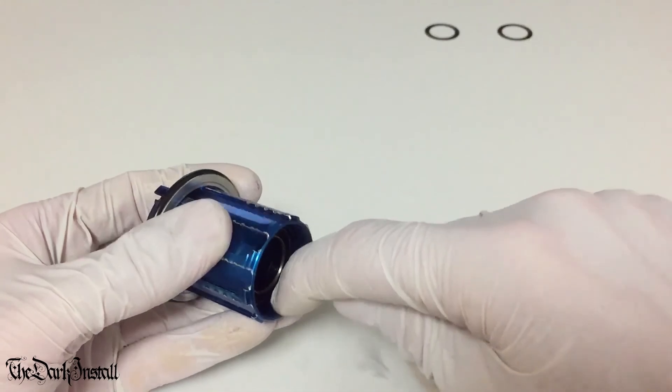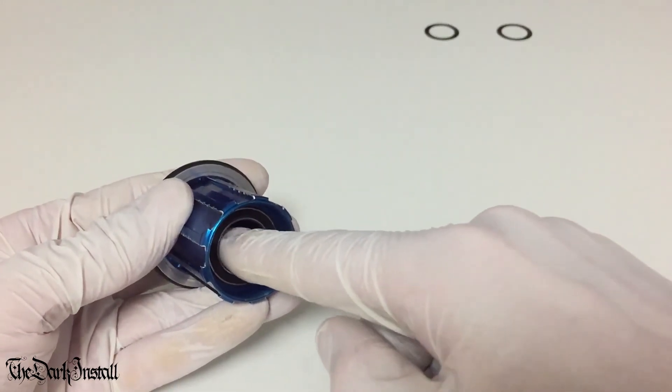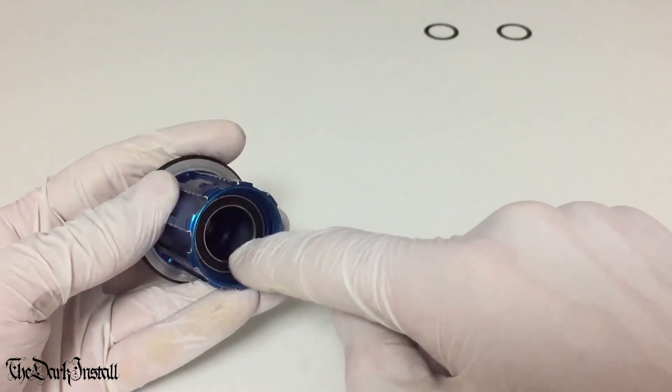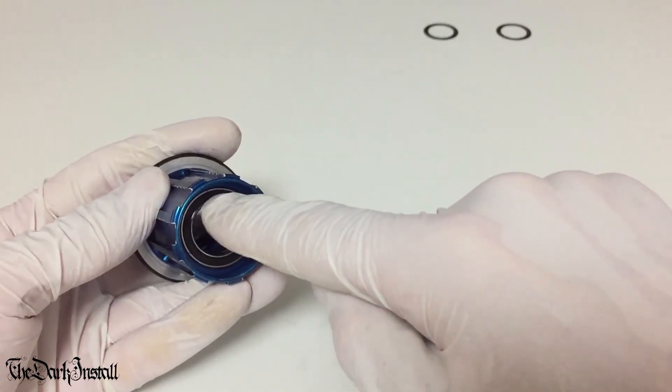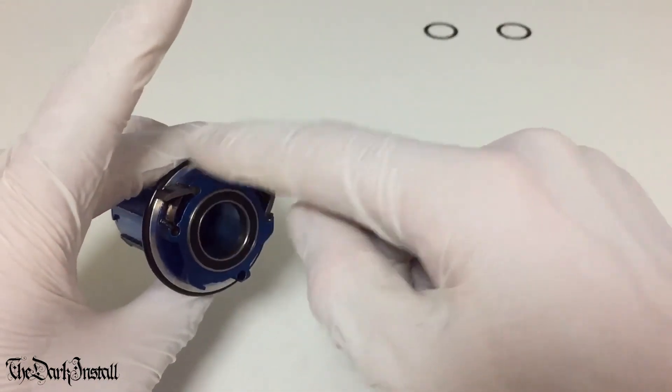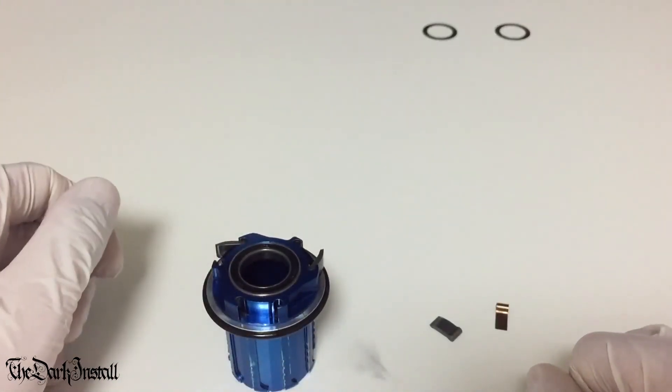Clean all these edges down. Clean the thread on the inside here. Clean the inside races of the bearings. Again, try to keep it off of the rubber seals. Clean that race in there. Get it all nice and degreased and shiny and clean.